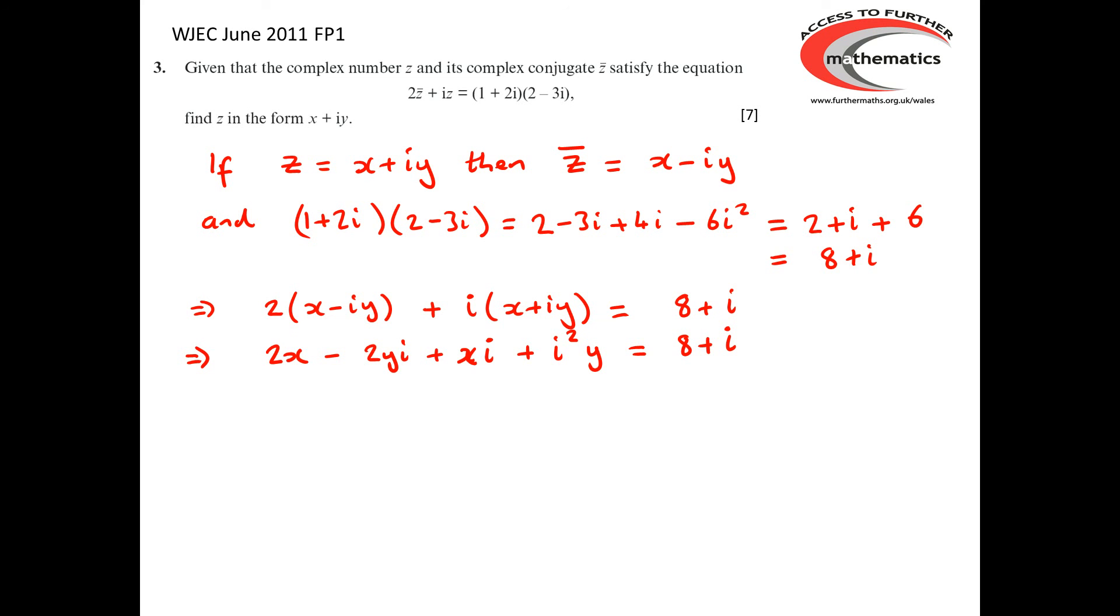We know that i² is minus 1. So we've now got 2x - 2yi + xi - y = 8 + i.